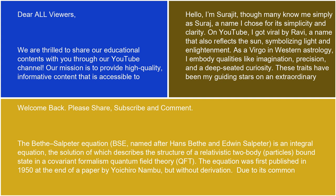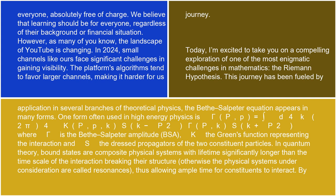The Bethe-Salpeter Equation, BSE, named after Hans Bethe and Edwin Salpeter, is an integral equation, the solution of which describes the structure of a relativistic two-body bound state in a Covariant Formalism Quantum Field Theory, QFT. The equation was first published in 1950 at the end of a paper by Yoichiro Nambu, but without derivation, due to its common application in several branches of theoretical physics. The Bethe-Salpeter Equation appears in many forms.